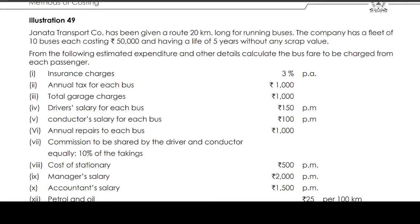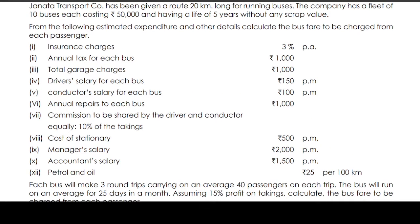Insurance charges is 3% per annum. Annual tax for each bus is 1,000 rupees. Total garage charges is 1,000. Driver salary for each bus is 150 per month. Conductor salary for each bus is 100 per month. Annual repairs to each bus is 1,000 rupees. Commission to be shared by the driver and conductor equally is 10% of the takings. Cost of stationery is 500 rupees. Manager salary is 2,000 per month and accountant salary is 4,500 per month. Petrol and oil is 25 rupees per 100 km.